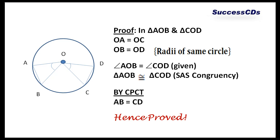Angle AOB and angle COD are equal to each other, since it is already given to us. Therefore, triangle AOB is congruent to triangle COD by SAS congruency.